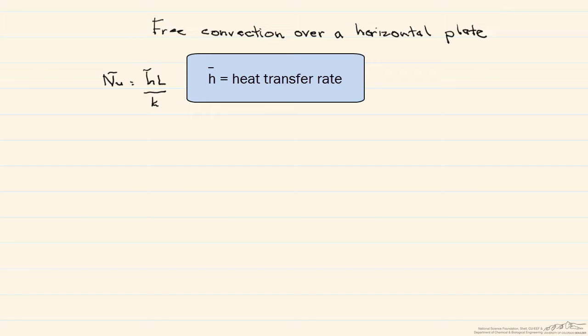This Nusselt number is usually a function of the Rayleigh number as well as the Prandtl number. Our goal is to find the appropriate correlation for the Nusselt number, thereby being able to solve for h.